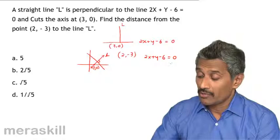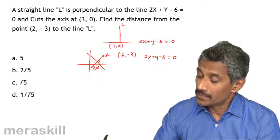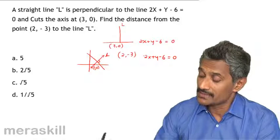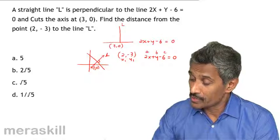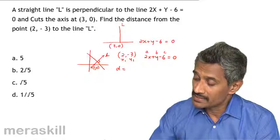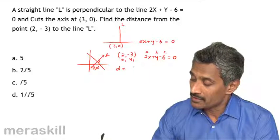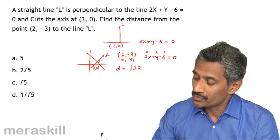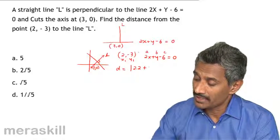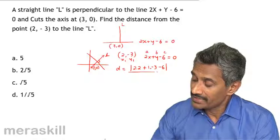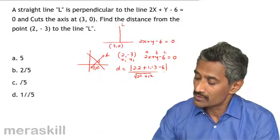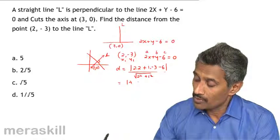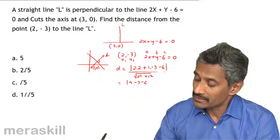Now here, looking at 2x + y - 6 = 0, we identify x₁, y₁, and the coefficients a, b, c. So the distance d is given by the absolute value of a·x₁ + b·y₁ + c divided by √(a² + b²). That gives us |2×2 + 1×(-3) + (-6)| divided by √(2² + 1²).